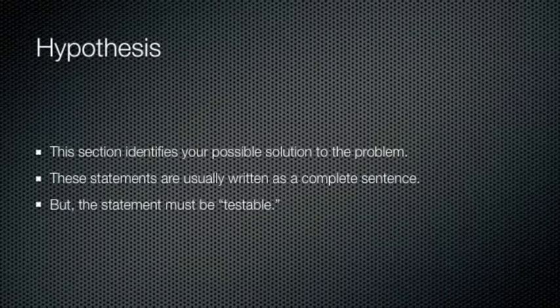The second part of the scientific method is the hypothesis. This section identifies your possible solution to the problem that you're trying to study. These statements are usually written as a complete sentence, and it's important that when you write the sentences, those sentences also be written in such a form or manner that the statement is testable. For example, if I'm trying to determine whether Elmer's glue is more effective than Carpenter's glue, one of the hypotheses would be that I would say Elmer's glue is more effective than Carpenter's glue. That way the statement is testable. There's only two possible answers there. It's either it is more effective than Carpenter's glue or it's not more effective, in which case either way I'll get a definite decision from that.